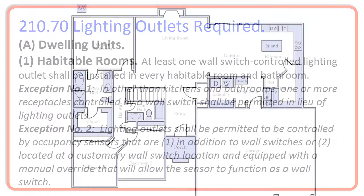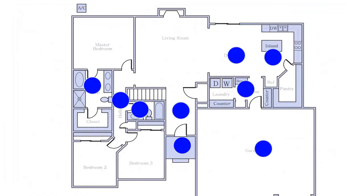Let's look at our drawing. Everything colored in blue is an area where you're required to have a light fixture that's controlled by a switch. Everything colored in red are areas where you would be allowed to use a switched receptacle. As far as wall switches go, we can use occupancy sensor switches instead of a switch as long as the sensor is a switch and it's in the location that a normal switch would be in. You can't just put an occupancy sensor in without a switch in those rooms.